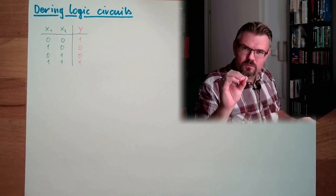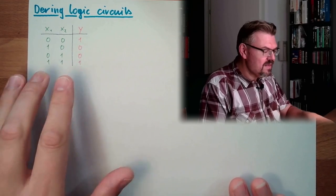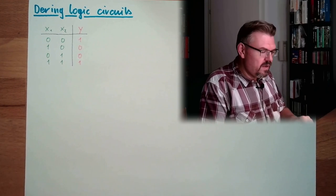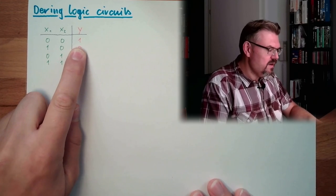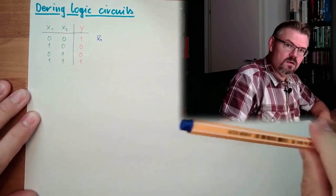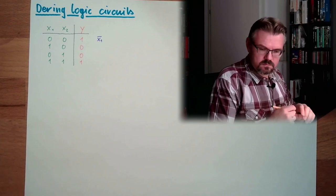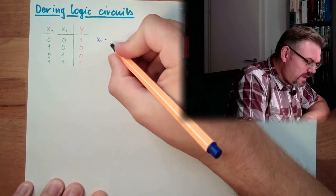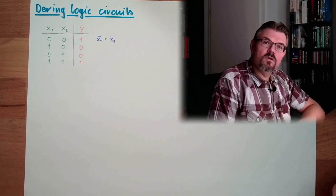We just note with the rules of boolean algebra. Let's only look at the lines where the output is true. And look at the inputs. So what must happen that the output here is true? It must happen that x1 is not there. And x2 is not there. Both must be 0. This should happen.